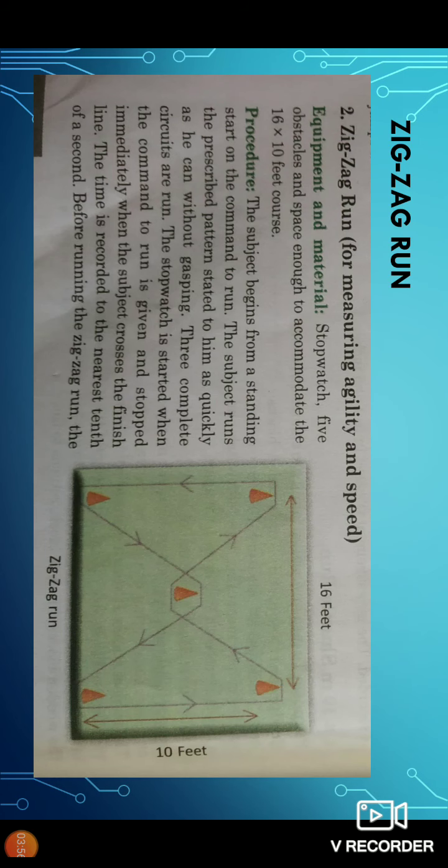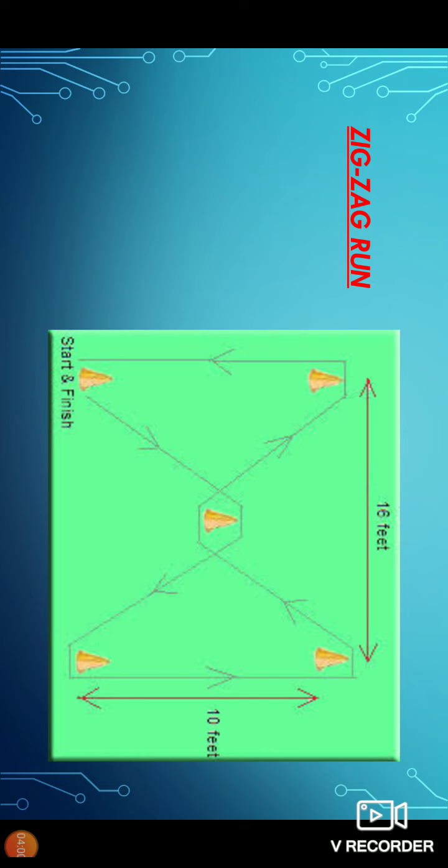We can see the marking and how to do this. Five obstacles, 16 meter distance and 10 feet distance. The width and length: 16 feet length and 10 feet wide.